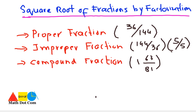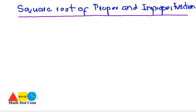There are three types of fractions: proper fraction, improper fraction, and compound fraction. In a proper fraction, the numerator is smaller compared to the denominator. In an improper fraction, the numerator is greater than or equal to the denominator. In a compound fraction, the number is expressed in mixed form. We will see how to find their square root one by one, starting with proper and improper fractions.